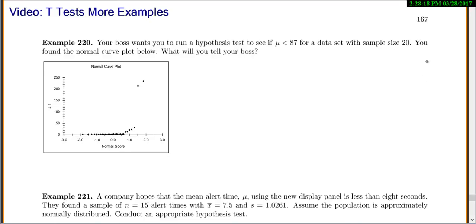In this video we're going to do some more examples of the t-test for our population mean. In our first example, our boss wants us to run the hypothesis test to see if our mean is less than 87 for a data set with a sample size of 20.